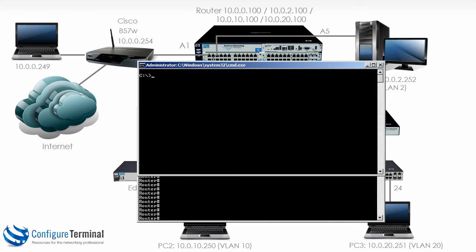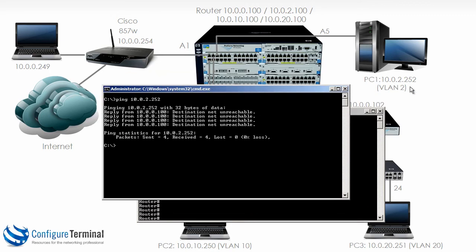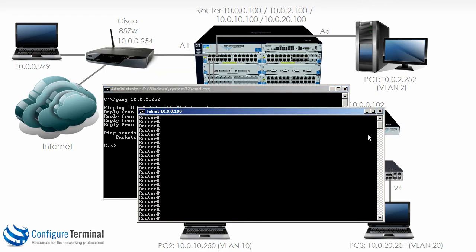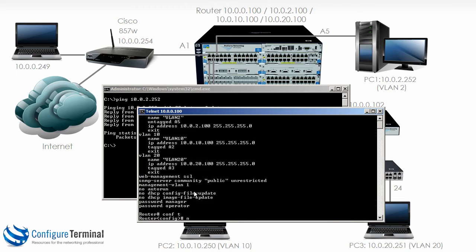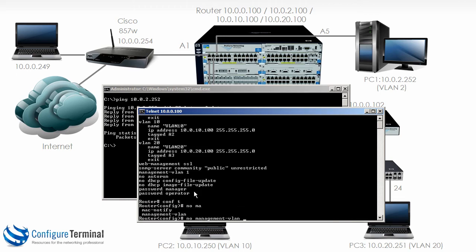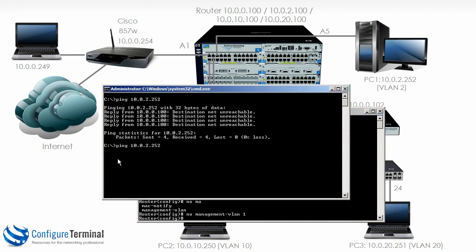This is an additional step to protect your networking equipment from unauthorized users. From my local PC, I'm going to try and ping 10.0.2.252, PC1 — and as you can see the pings fail. Typing 'show run' on the 5406, you can see that we specified the management VLAN is VLAN 1. So I'm going to say 'no management VLAN 1' and let's do that ping again.